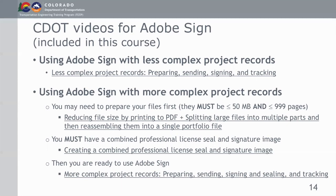Another video covers the task of taking a licensed seal image and a signature image — two separate images — and combining them into a single image for use on record sets. These prerequisite videos must be completed before taking the final Adobe Sign video, since you need a file under 50 megabytes, fewer than 999 pages, and a combined seal-and-signature image before completing that training.